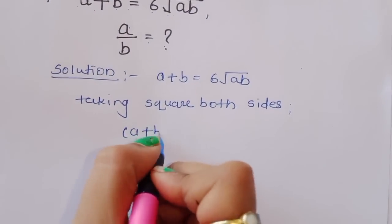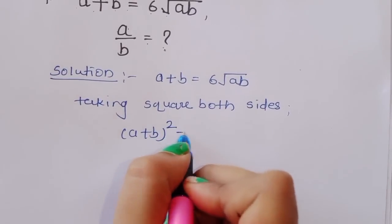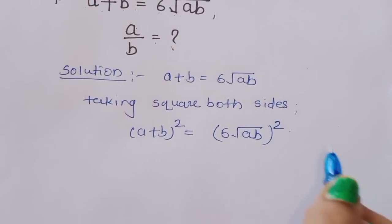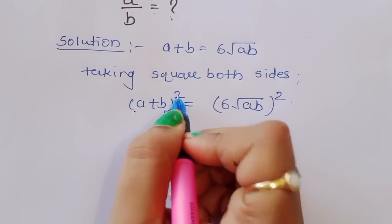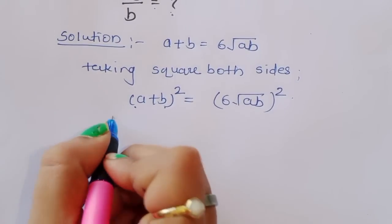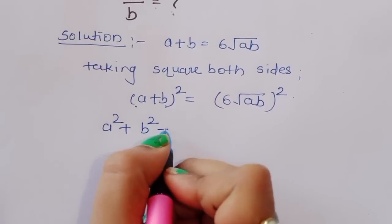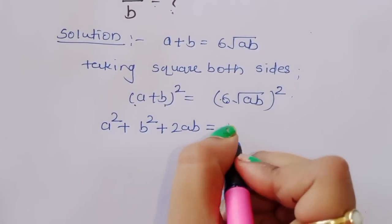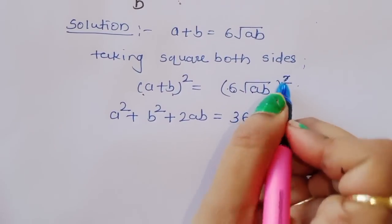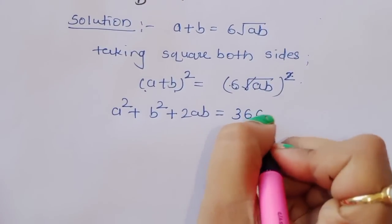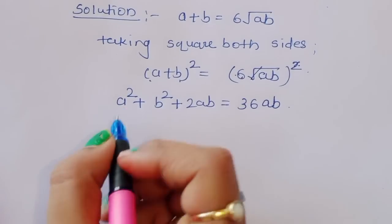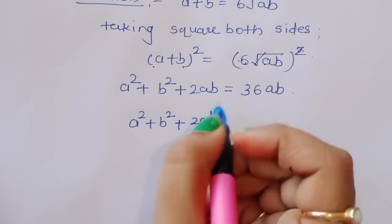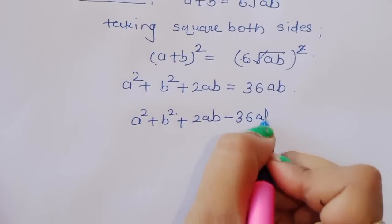Taking square of both sides, we will get: a plus b whole square is equal to 6 root of ab whole square. Now we know the formula of a plus b whole square: a squared plus b squared plus 2ab is equal to 36ab, since the square cancels the square root.